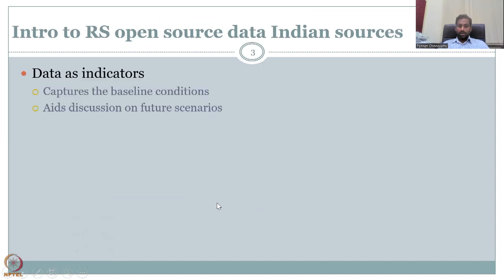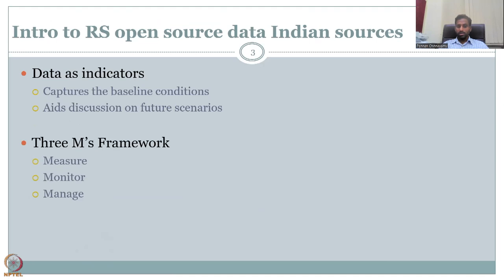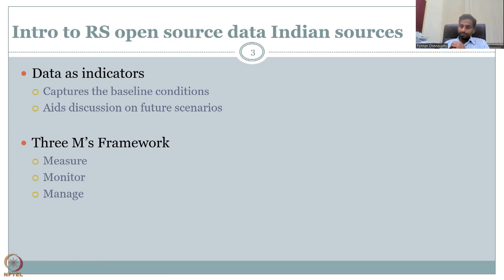In the next slide, we wanted to re-stress that data can be used as indicators — as information to manage land for rural development, but also to capture baseline conditions and aid future discussions and scenarios. The underlying goal is the three M's: measure, monitor, and manage. You need to set up instruments to measure; long-time measurement becomes monitoring; and with measurements and monitoring data, you can do proper management. Some people convert the three M's as monitor, model, and manage.